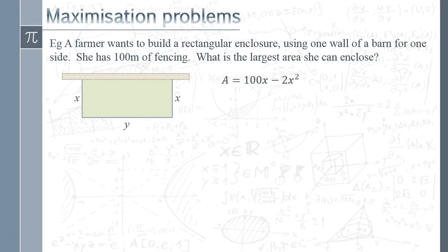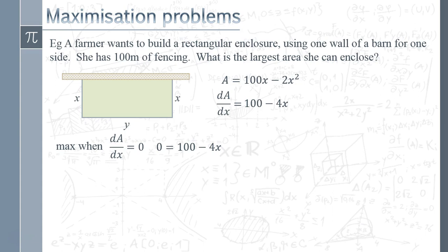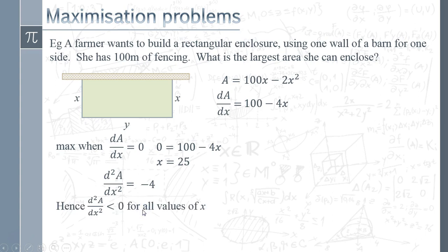Differentiating gives us dA/dx = 100 − 4x. The maximum occurs when that equals zero, so we solve 0 = 100 − 4x, giving x = 25. To confirm it's a maximum, we differentiate a second time: d²A/dx² = −4. Since there's no x in this result, d²A/dx² is −4 for all values of x — it's negative, so we definitely have a maximum point.